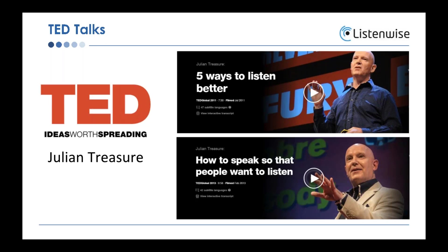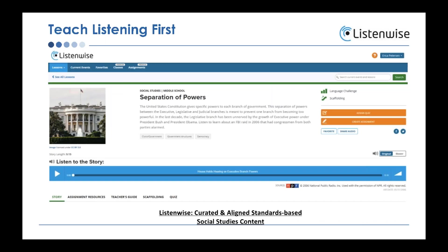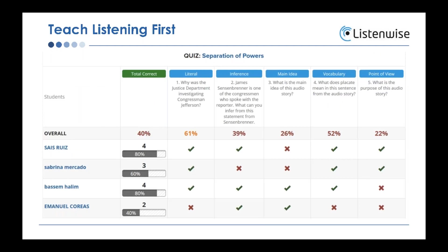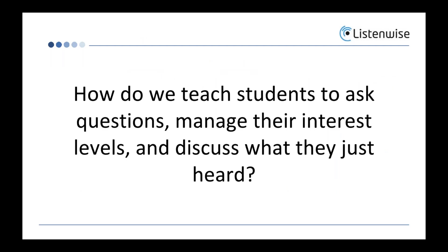Here is a sample social studies lesson — I'm required to teach about the Constitution and the branches of government. I found that there are close to 96 ListenWise quizzes for social studies stories. The reporting breaks it down so you can see what your students are struggling with. In this case, my students look like they're struggling with point of view and main idea, so you can readjust and re-teach your lessons to focus on those two elements of listening.